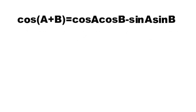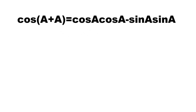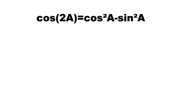From the sum of two angles identity, we have cosine(a + b) = cosine(a)cosine(b) - sine(a)sine(b). But if the two angles are equal, or angle a is equal to b, then cosine(a + b) becomes cosine(a + a), which is equal to cosine(a)cosine(a) - sine(a)sine(a). Simplifying, we have cosine(2a) = cos²a - sin²a.